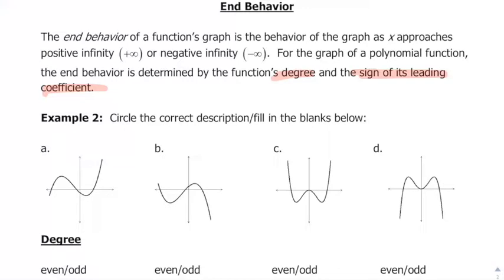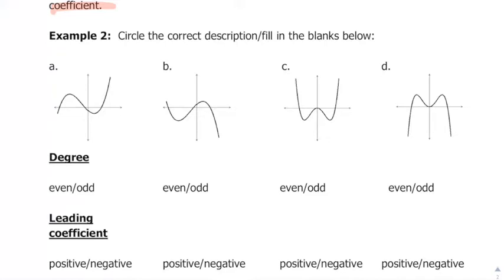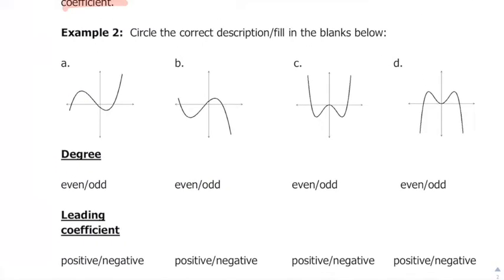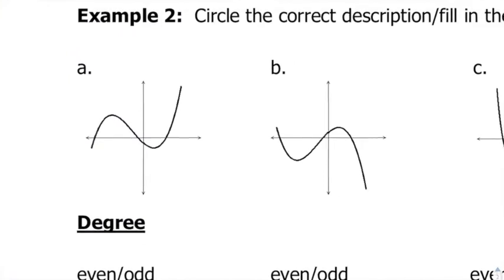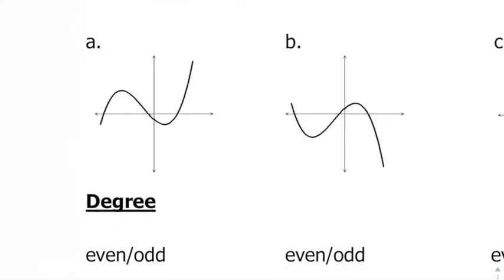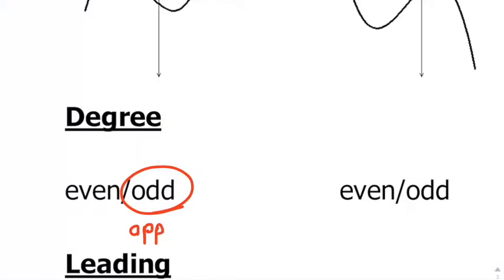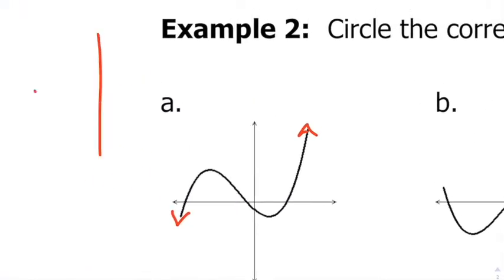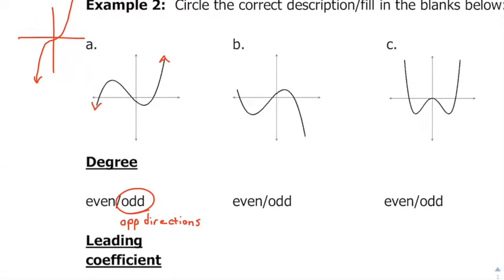Those are two key things, especially if we don't have the graph. To practice the notation, we look at the degree — even or odd — and the leading coefficient. If the ends are in opposite directions, the degree is odd. This graph goes in opposite directions, like an x cubed graph — so we call that odd. Anytime a graph goes in opposite directions, that's an odd degree.